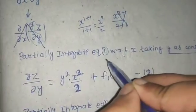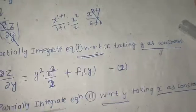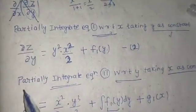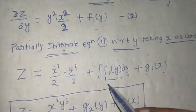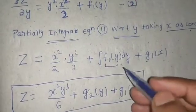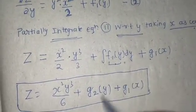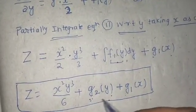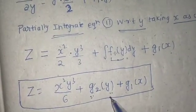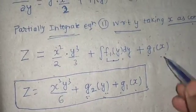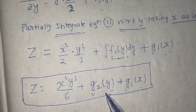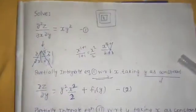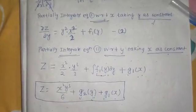First we removed the del by del X cover by integrating with respect to X, taking Y as constant, so the constant of integration was a function of Y. Then we removed the del by del Y cover by integrating with respect to Y, taking X as constant, giving G1(X). The integral of F1(Y) is named G2(Y) — a function of Y only. So Z equals X squared Y cubed by 6 plus G2(Y) plus G1(X). A very easy problem — it took some time to discuss it deeply, but it was an easy problem. Thanks and nice to see you.